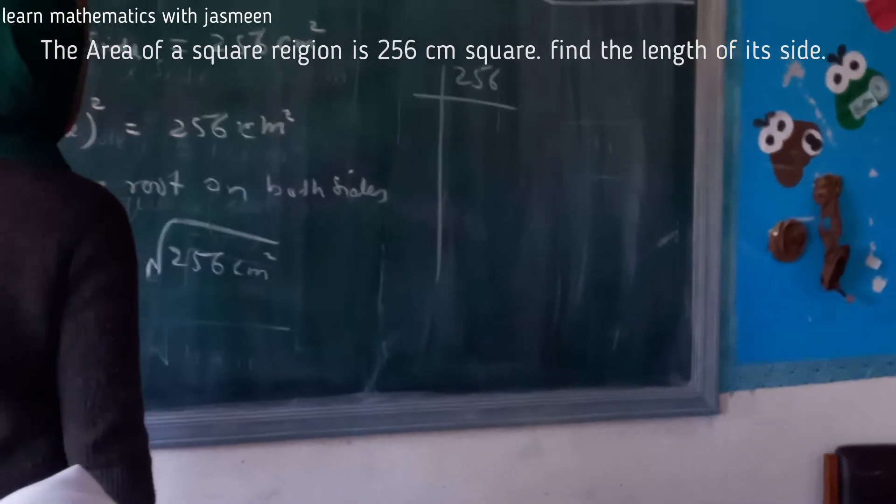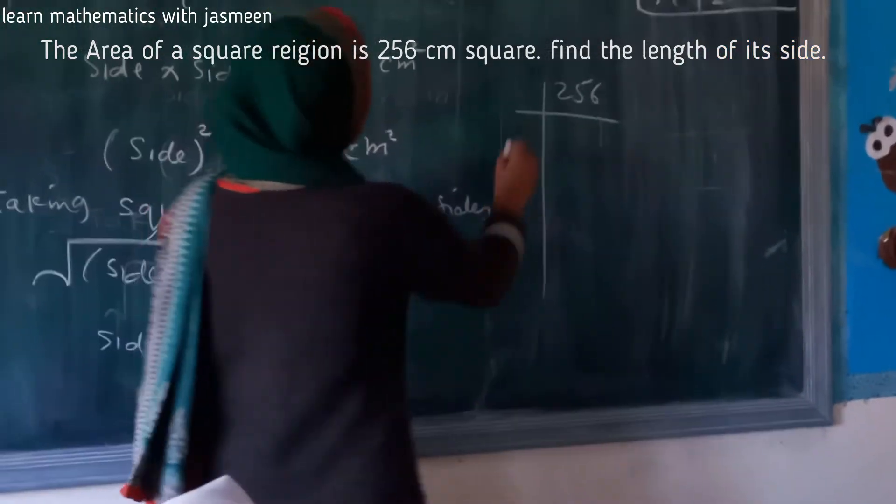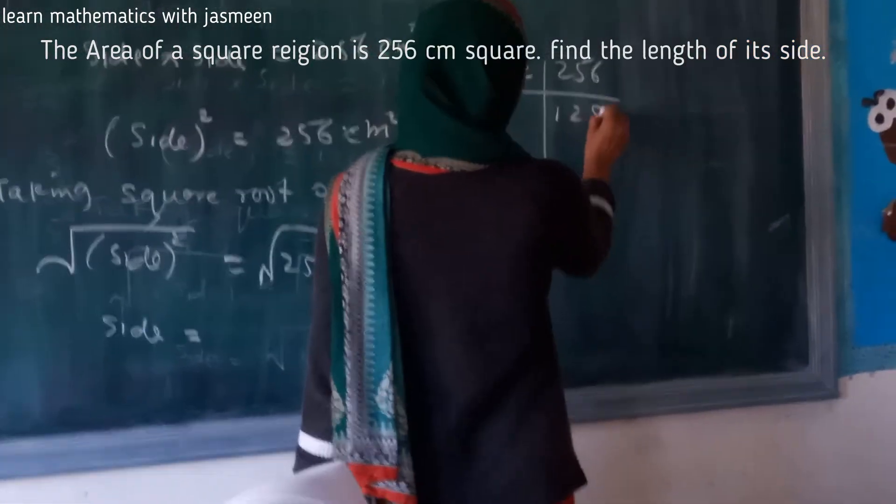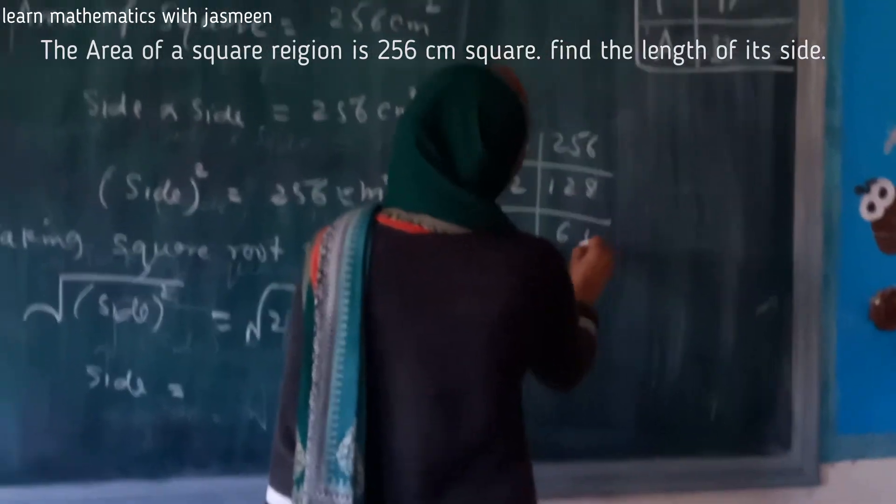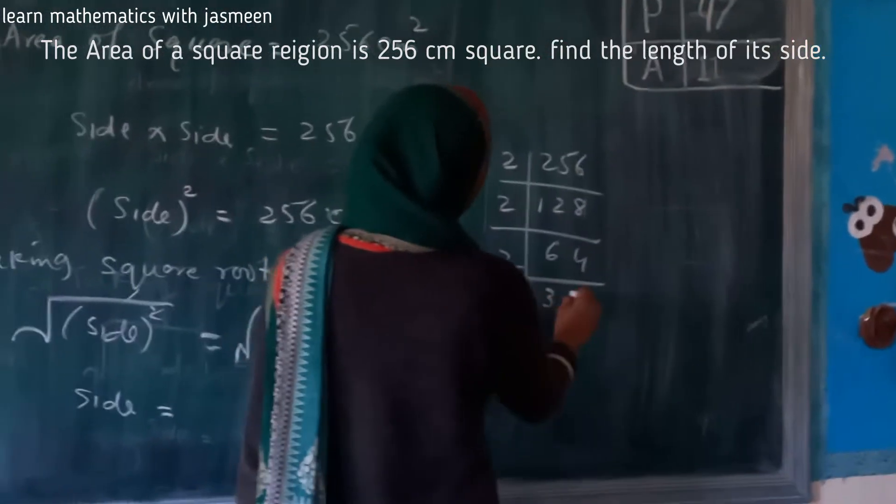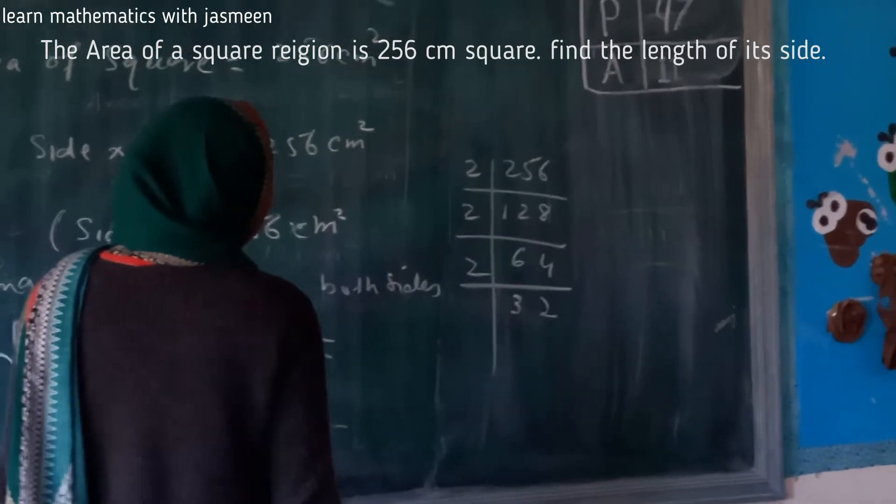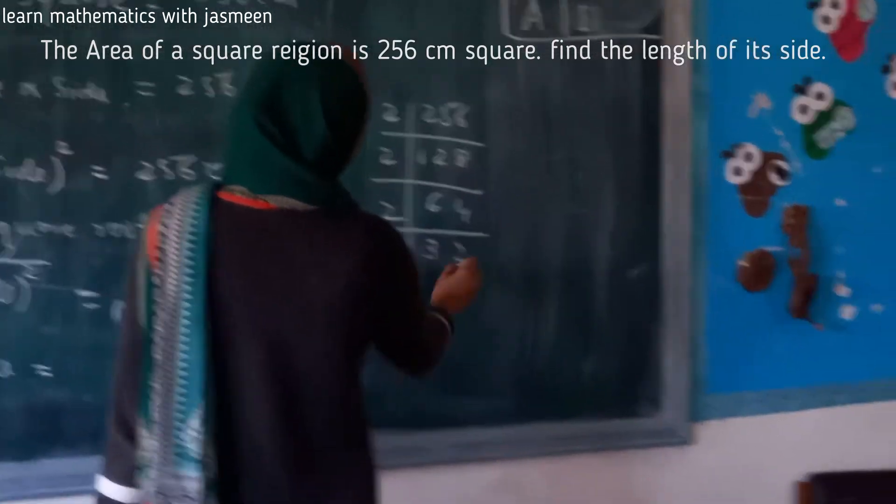Side will be equal to the square root of 256, which is 16.